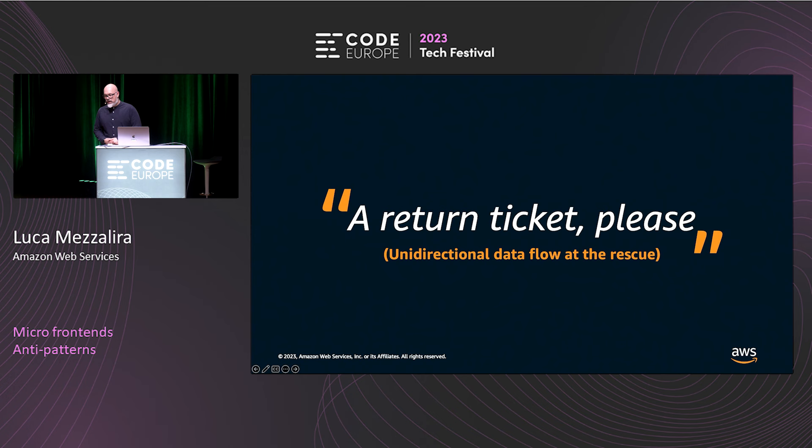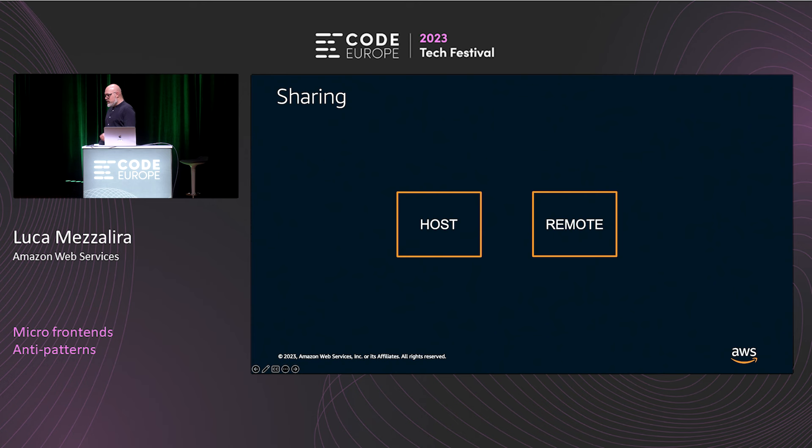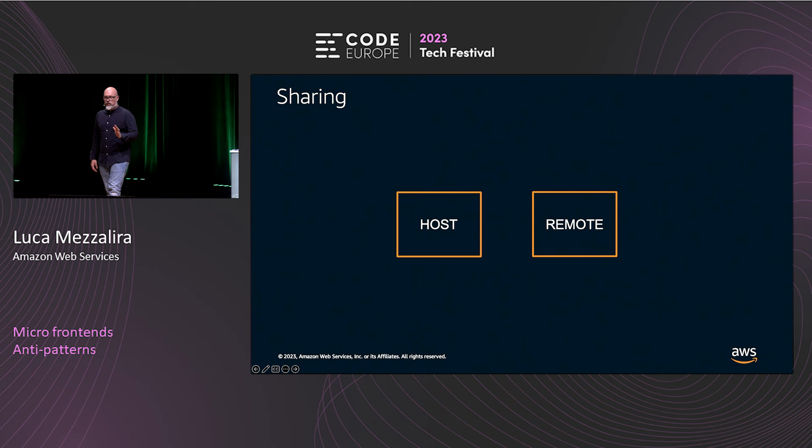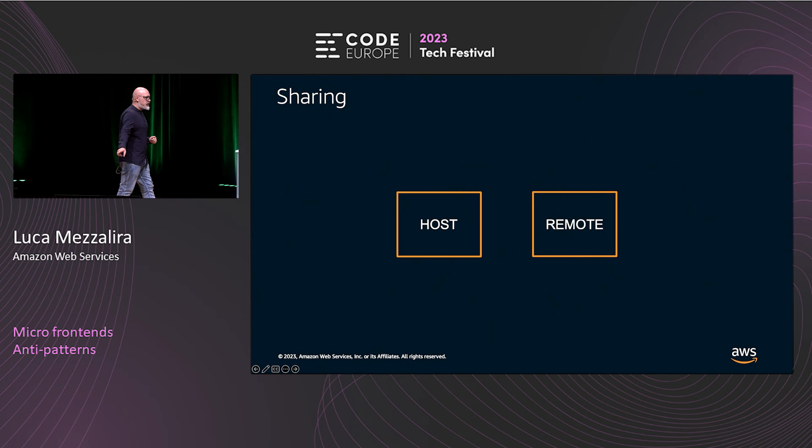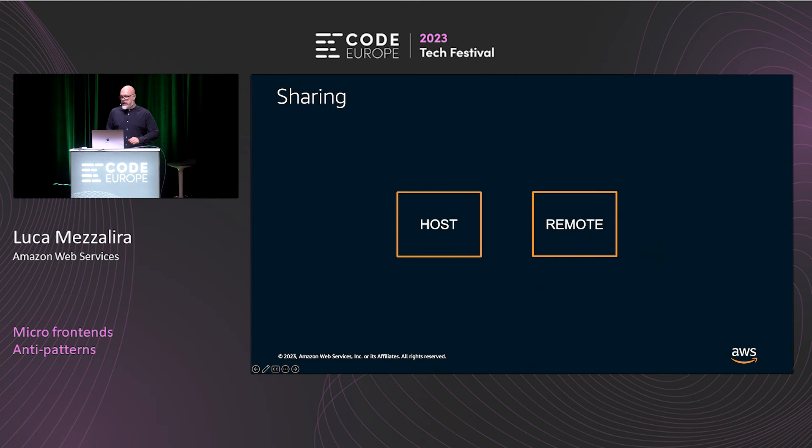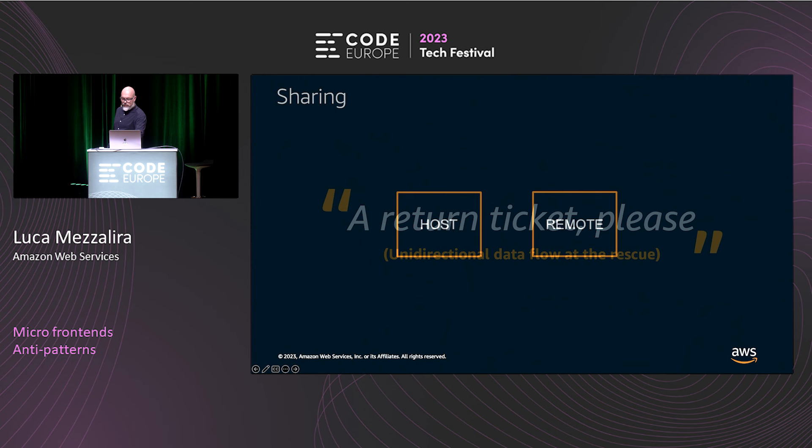The next one is called 'a return ticket, please' — or the unidirectional data flow to the rescue. In some implementations by frameworks and teams, I have seen bidirectional sharing — for instance coming from Module Federation, where you have the host or container loading the micro-frontend, but also the capability for the host to share stuff back to the remote. That can be tricky, because you might find some benefit in the short term, but there's one thing we've learned the hard way.